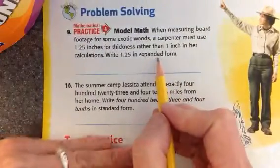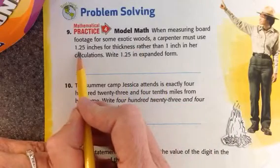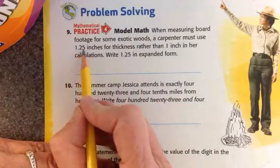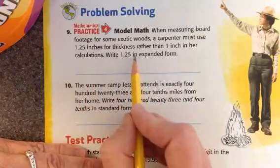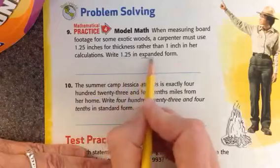All right, let's look at number nine. When measuring board footage for some exotic woods, a carpenter must use one and twenty-five hundredths inches for thickness rather than one inch in her calculations. Write it in expanded form.